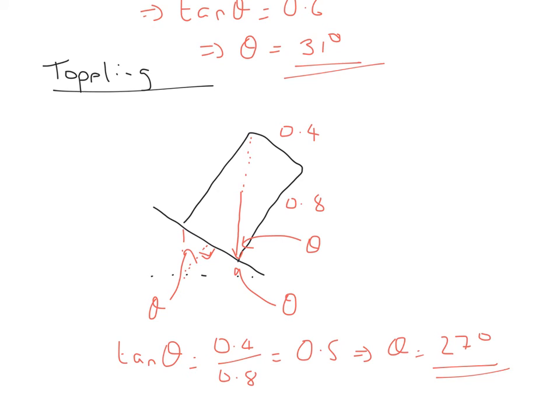So as we see, this value here is smaller than this value up here, so it's going to topple before it slides, so it topples without sliding. Okay, so hopefully that's helped to clear that up, and we've seen some cases of sliding and toppling, and then going on from this, you can look at some more complex examples of applying these principles.